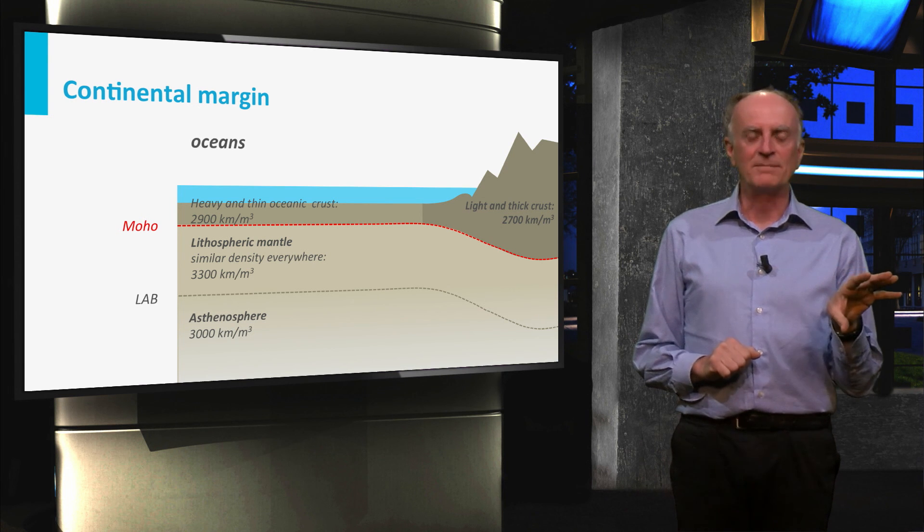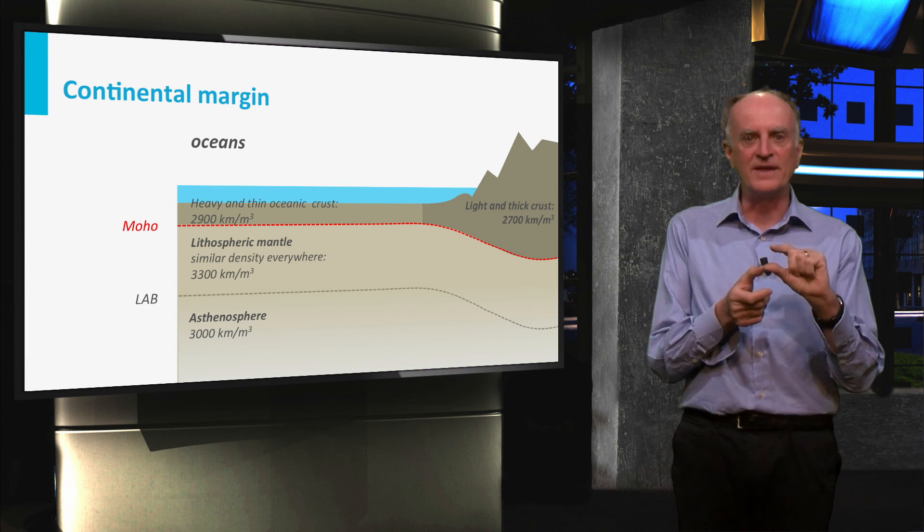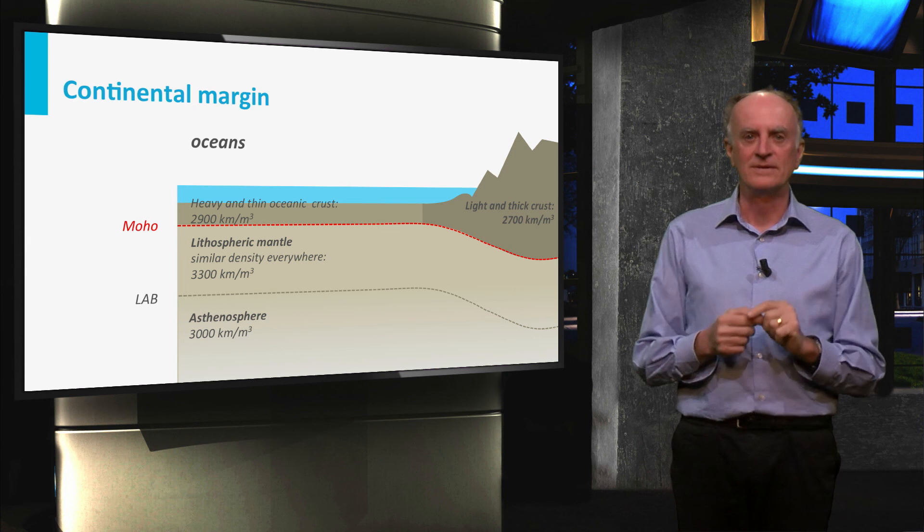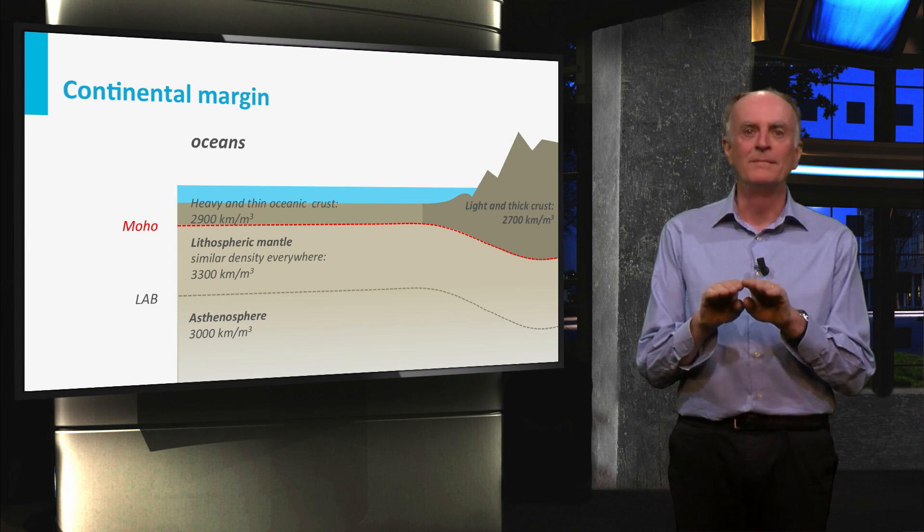On the left side of the picture, you have a thin, heavy crust underlain by a thin and heavy lithospheric mantle. No surprise that the top of this block will be very low, below sea level.